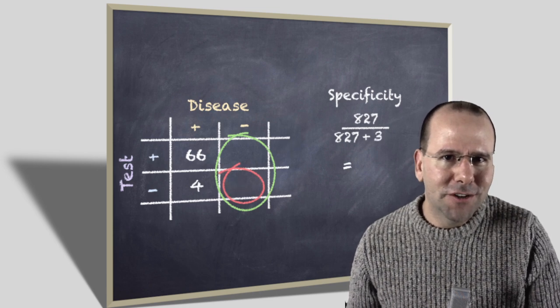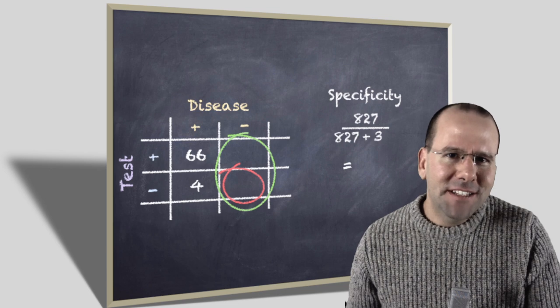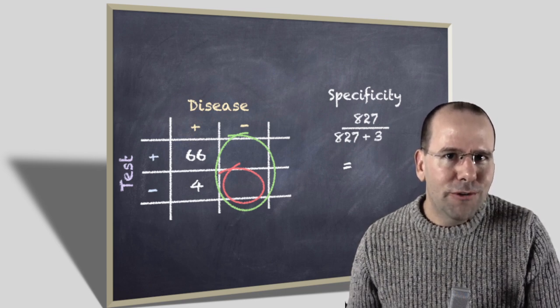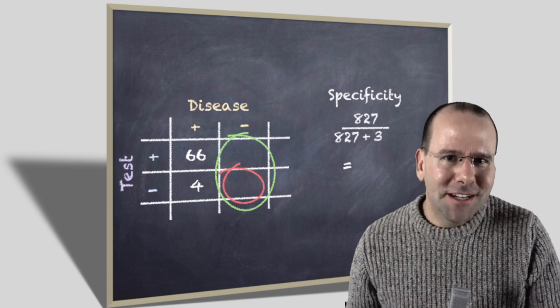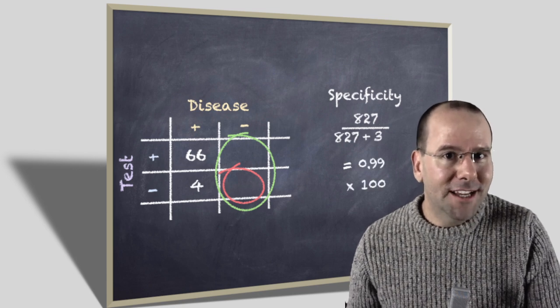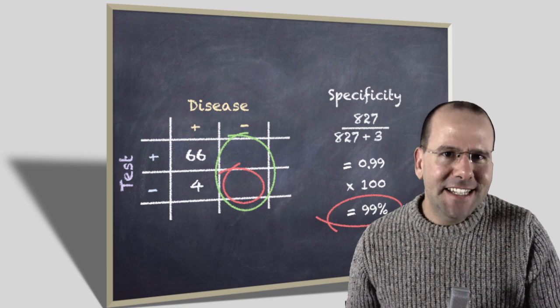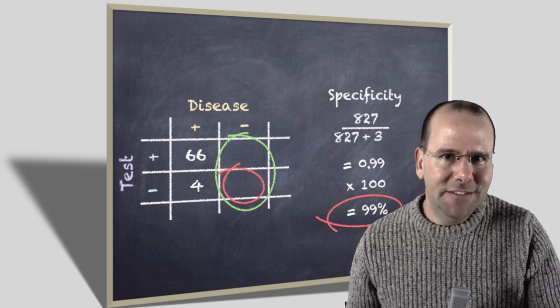So in this case, those encircled in red are the true negatives. So here we're saying 827 of the 830 will correctly test negative. So 827 over 830 is 0.99, which is 99%. So of people who don't have the disease, 99% of them will be correctly identified by this test.